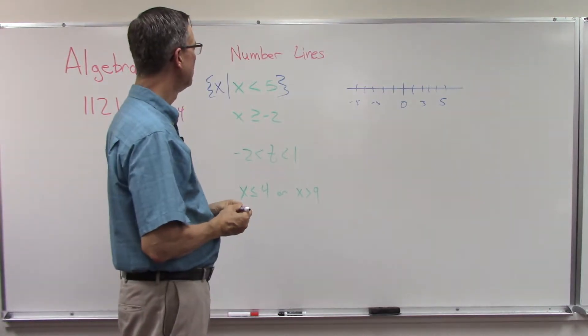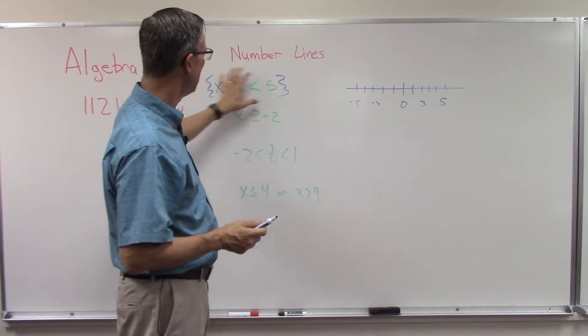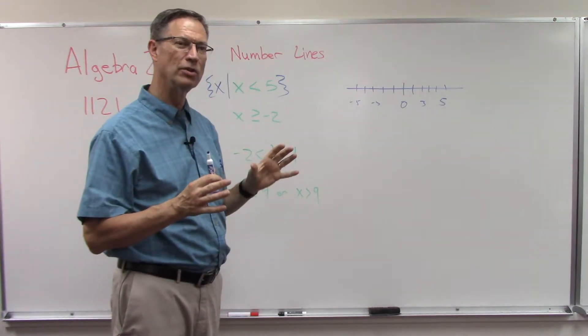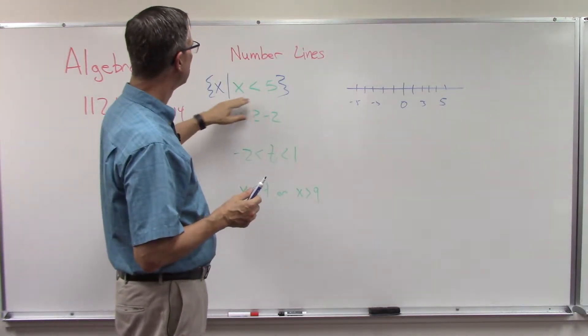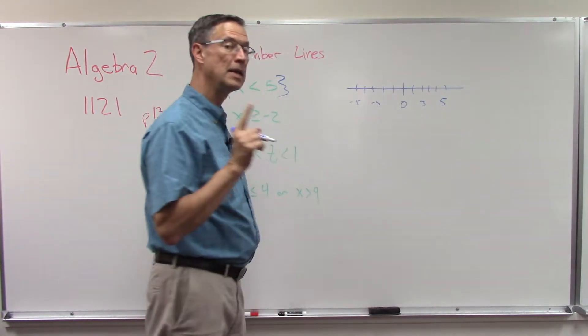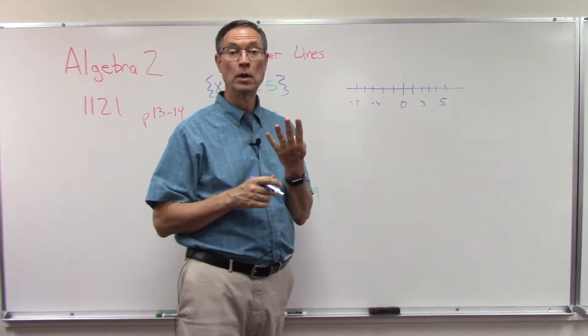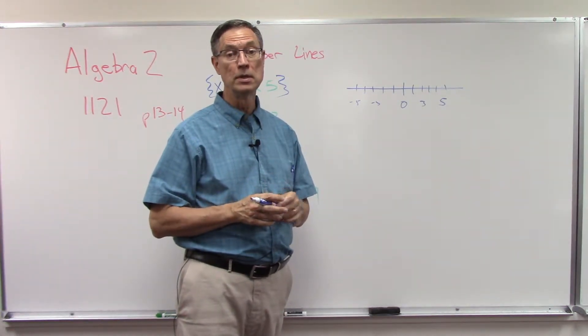So we're going to graph x is less than 5. Notice it's not equal to 5. Think of numbers that are less than 5: four, three, two, one, zero, negative numbers. But we also have all of the fractions and decimals.